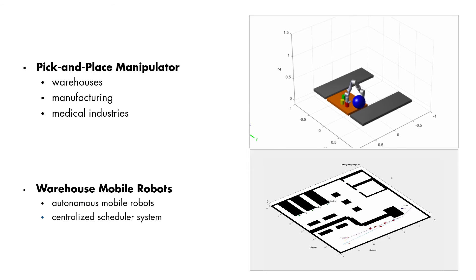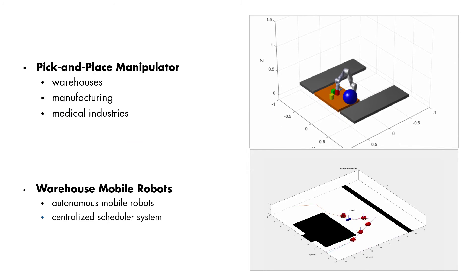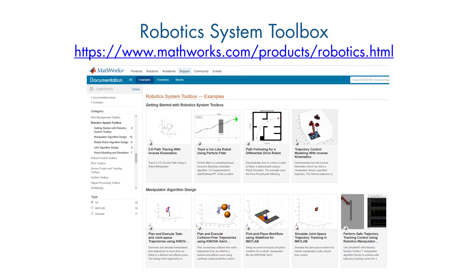You can jumpstart your own application with reference examples of common industrial robot applications. For more information, please visit the Robotics System Toolbox product page on MathWorks.com and download a trial to check out the reference examples.